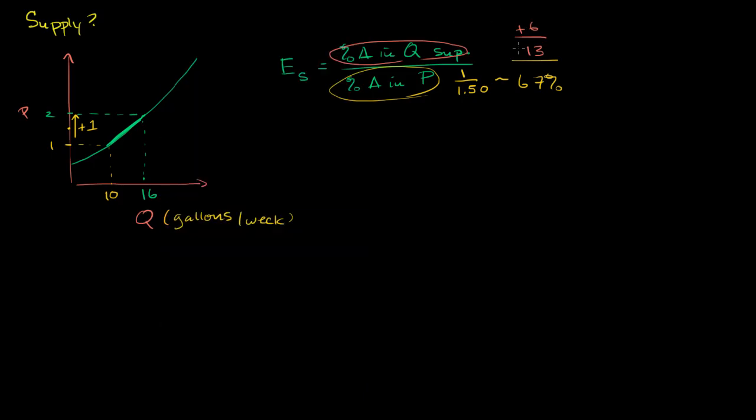So we have 6 divided by 13 gives us 46%. So this right over here is 46%. So we have, when we had, based on the way we calculated it, a 67% increase in price, we had a 46% increase in quantity supplied. So this is a 46% increase in quantity supplied.